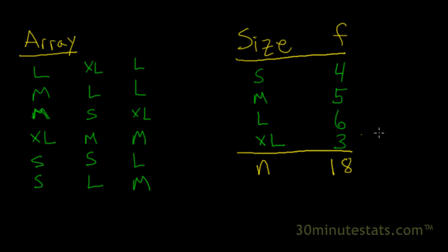And now we can see that the most frequently sold shirt is large. Right here we've got six large shirts sold. And that the least frequently sold shirt is an extra large. You can see that we only sold three extra larges. So the most frequent is the large. The least frequent is the extra large.